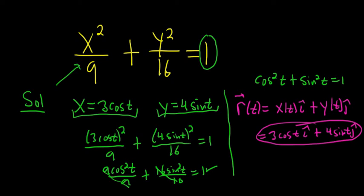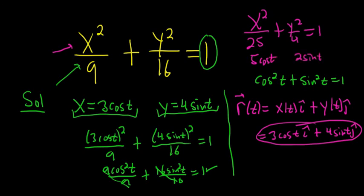So it's pretty easy to do it via observation. For example, if instead it was x squared over 25 plus y squared over 4 equals 1, then you would use 5 cosine t and 2 sine t. That would work for x and y, because 5 squared is 25, and 2 squared is 4.